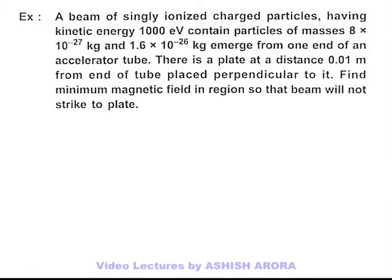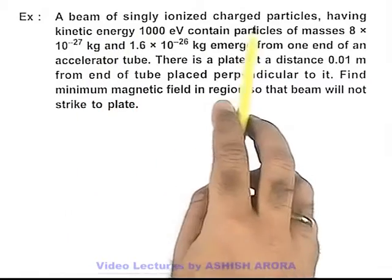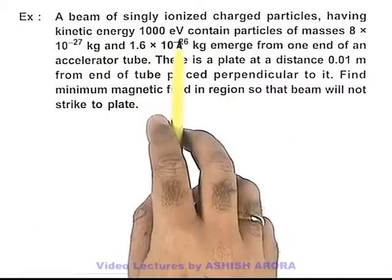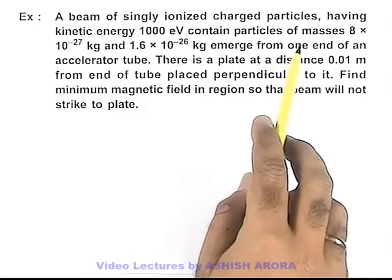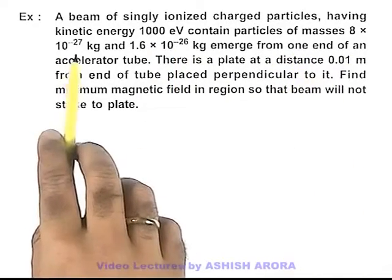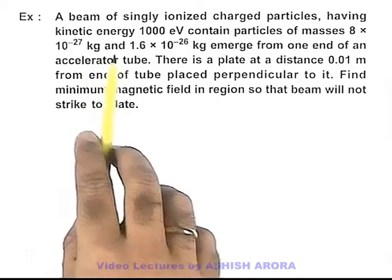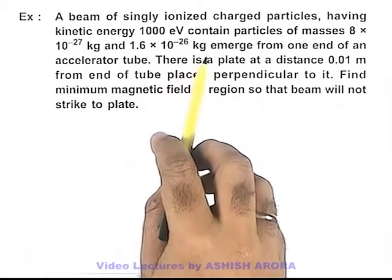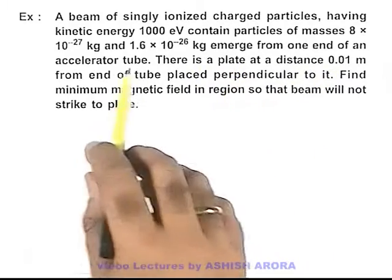In this example we are given that a beam of singly ionized charged particles, having kinetic energy thousand electron volt contain particles of masses 8 into 10 to power minus 27 kilogram, and 1.6 into 10 to power minus 26 kilogram emerge from one end of an accelerator tube.